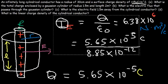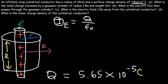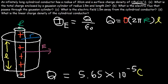Now for Part C: what is the electric field 1.5 meters away from the cylindrical conductor? Let's derive the equation. According to Gauss's law, electric flux equals total charge divided by epsilon-naught. The total charge is sigma times the lateral area 2πRL, where R is the radius of the cylindrical conductor and L is the length of the Gaussian cylinder.